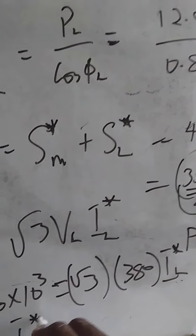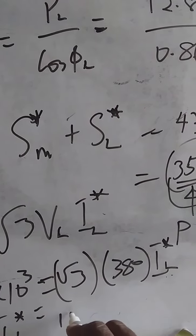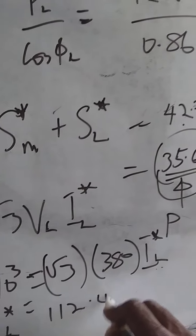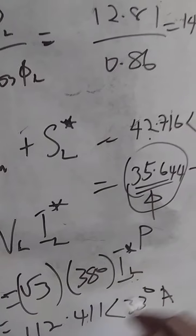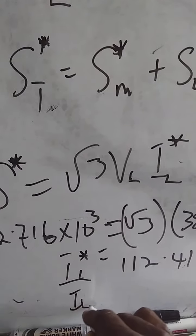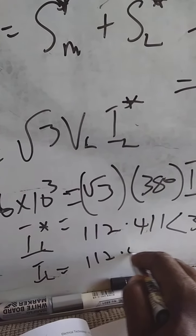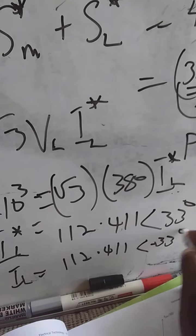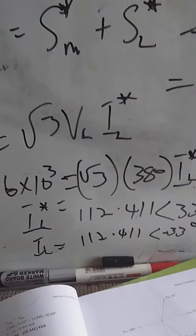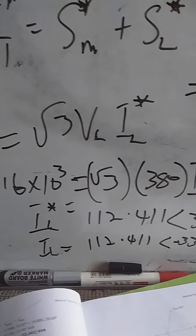That will help us to find what is our IL conjugate. Our IL conjugate gives us 112.411 at angle 33 degrees amps. So, that means our real IL will be 112.411 at angle minus 33 degrees amps. That is the question being answered, the line current that is asked. Thank you.